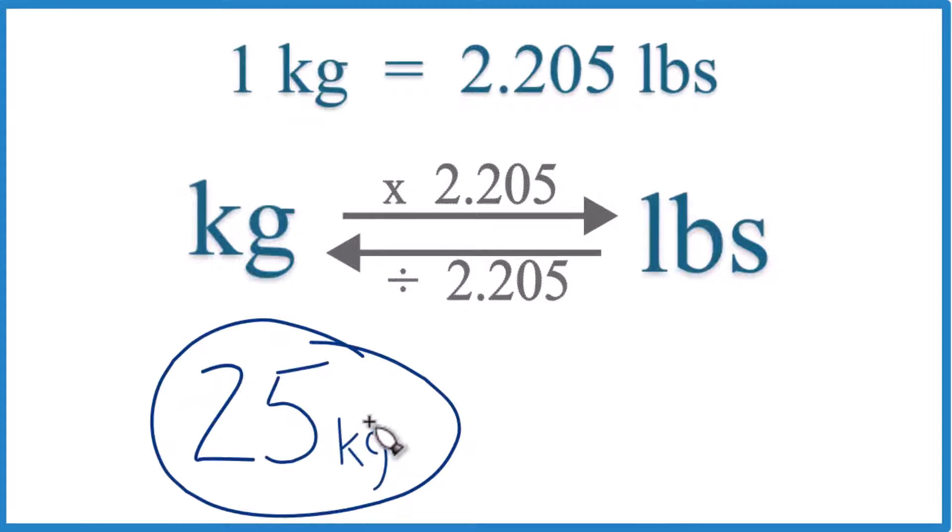If you have 25 kilograms, you want to get that to pounds, here's how you do it. One kilogram equals 2.205 pounds. This is a conversion factor, something you need to know if you're going from kilograms to pounds or pounds to kilograms.